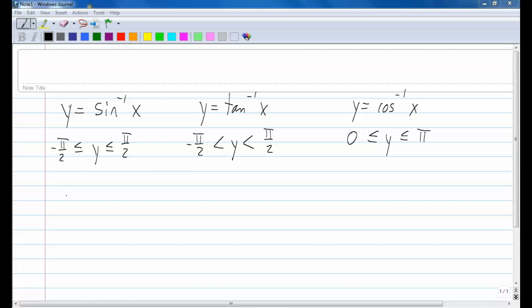We're going to look at the inverse of cosecant, we're going to look at the inverse of cotangent, and we're going to look at the inverse known as secant.